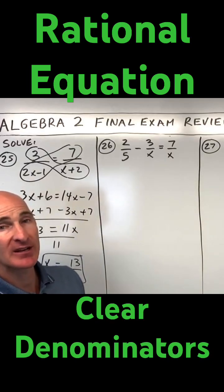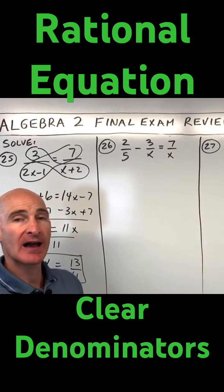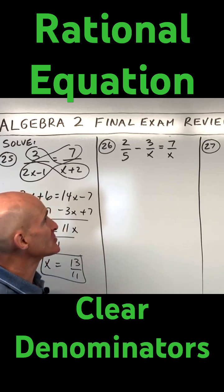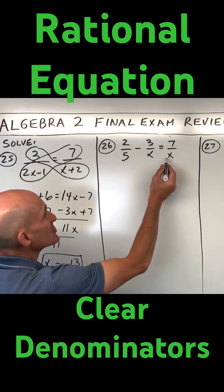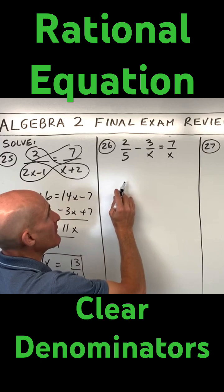All these problems really require getting a common denominator and multiplying through by that common denominator to clear the denominators. When I look at the denominators here, it looks like the common denominator is 5x.